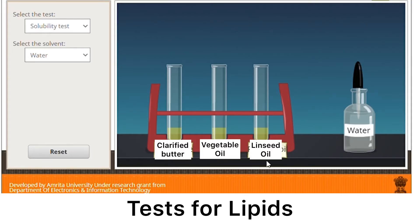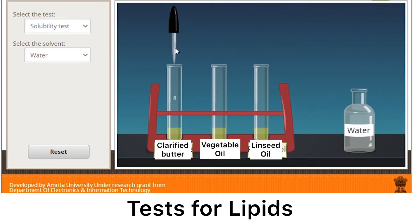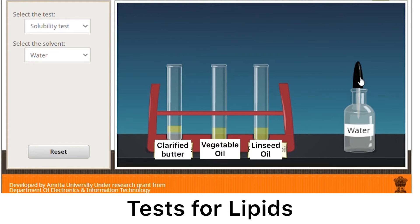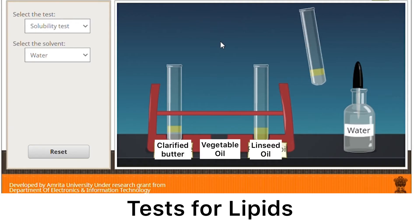And for our first solvent, we will be using water. Now that we have the setup ready, we will be adding about 5 ml of our solvent in each of the test tubes and mix. Observe what happens after the addition of water to each of the oil or fat sample. Record your observations. You will need this later when you answer the laboratory report sheet.